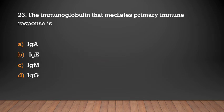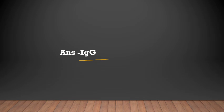The immunoglobulin that mediates the primary immune response is: IgA, IgE, IgM, or IgG. Answer: IgG — immunoglobulin G mediates the primary immune response.